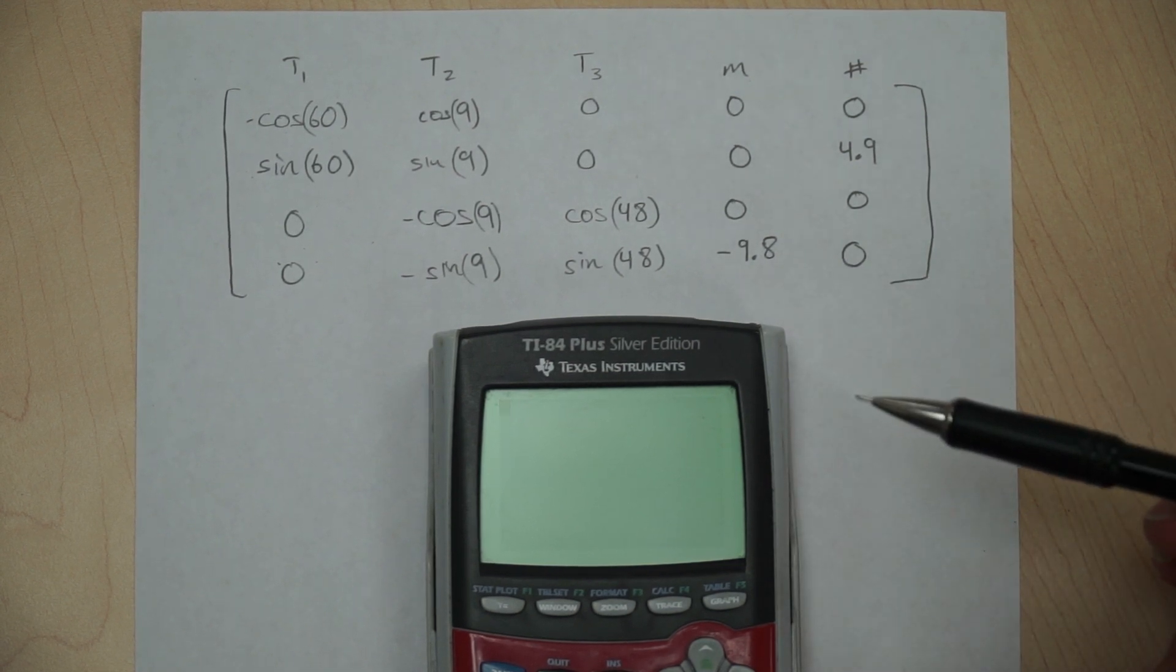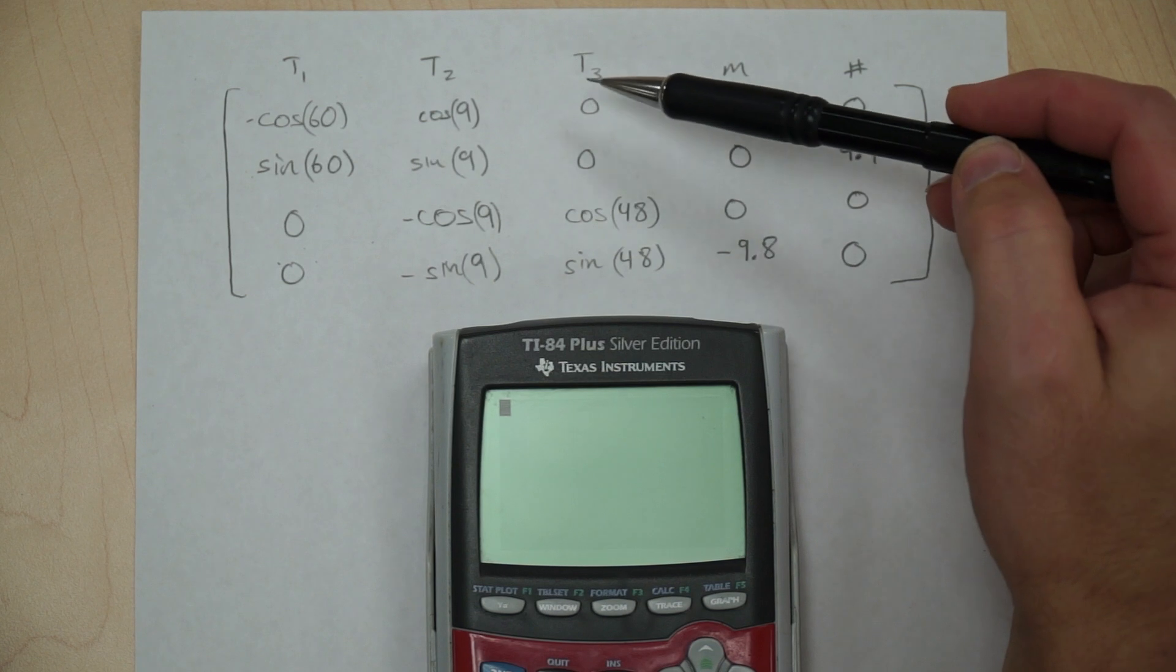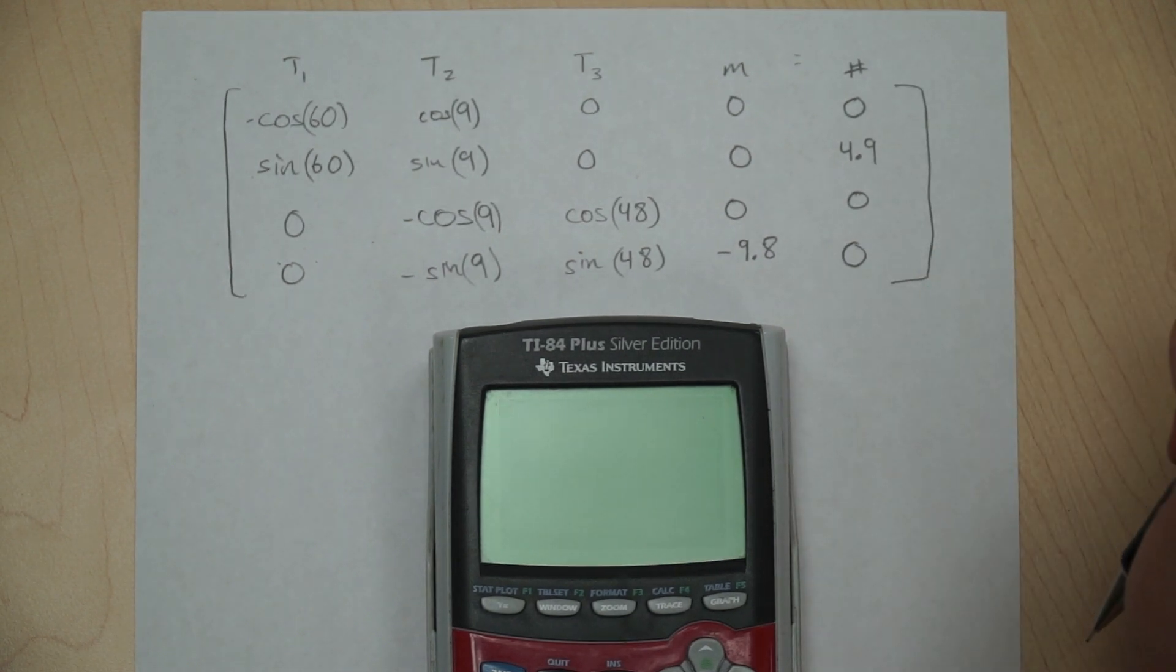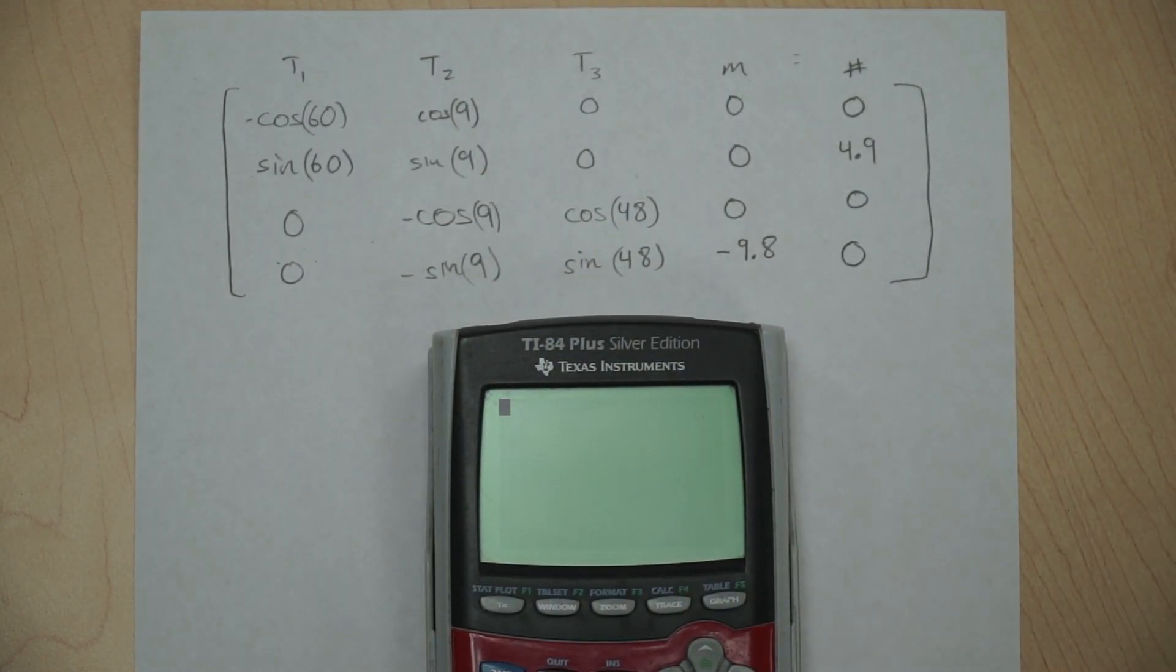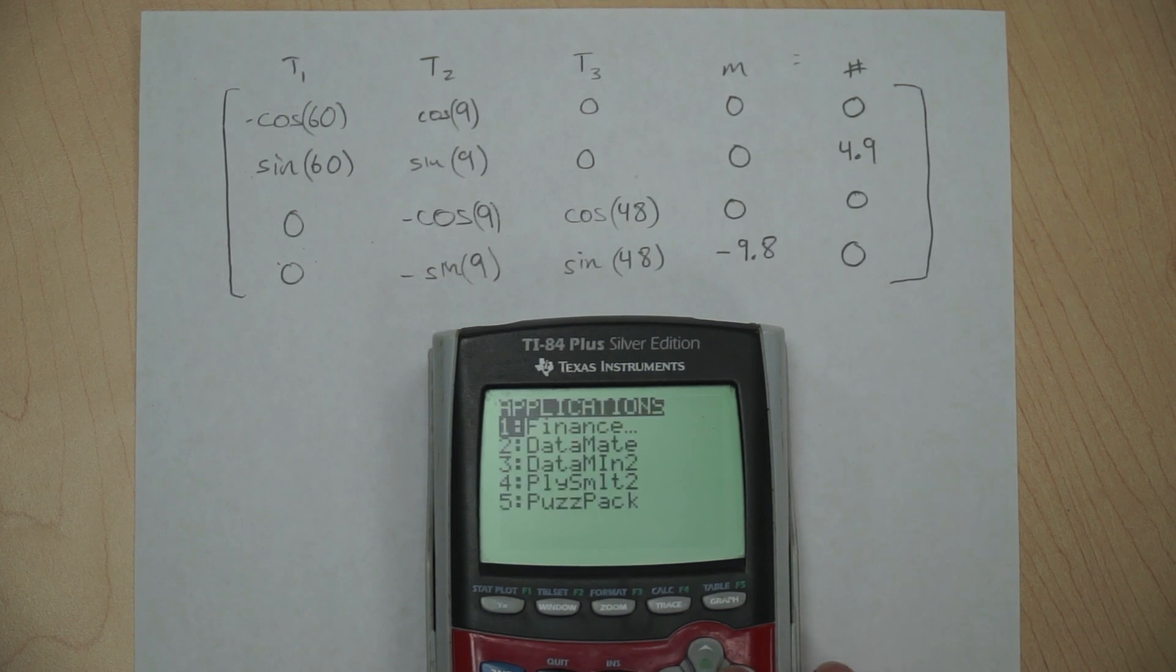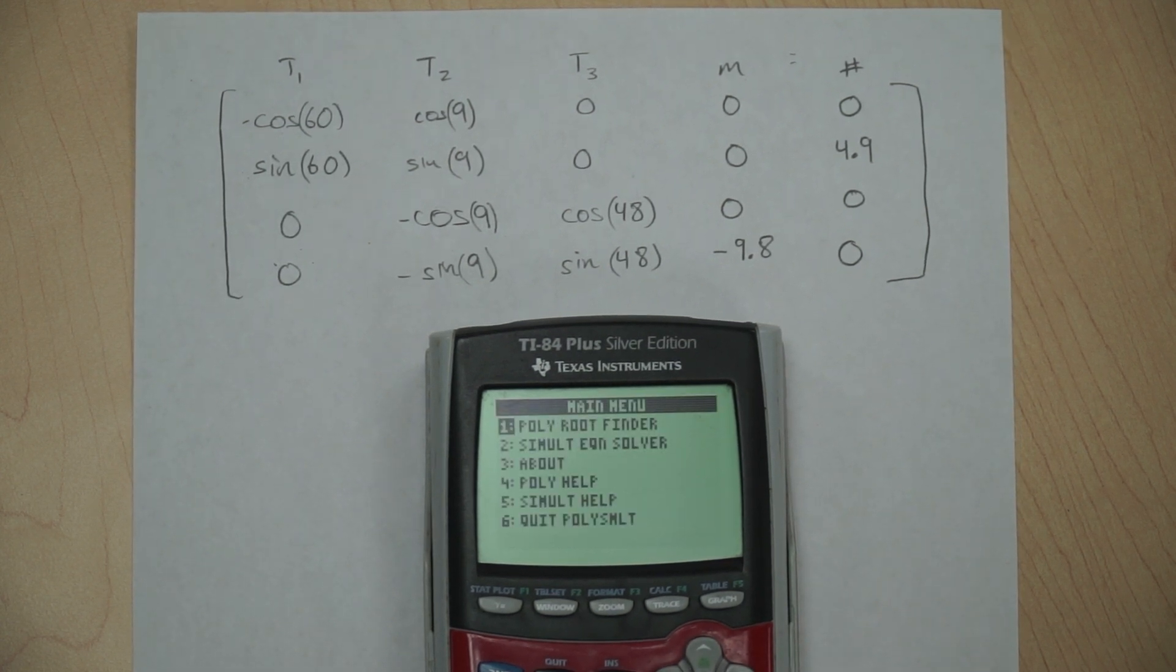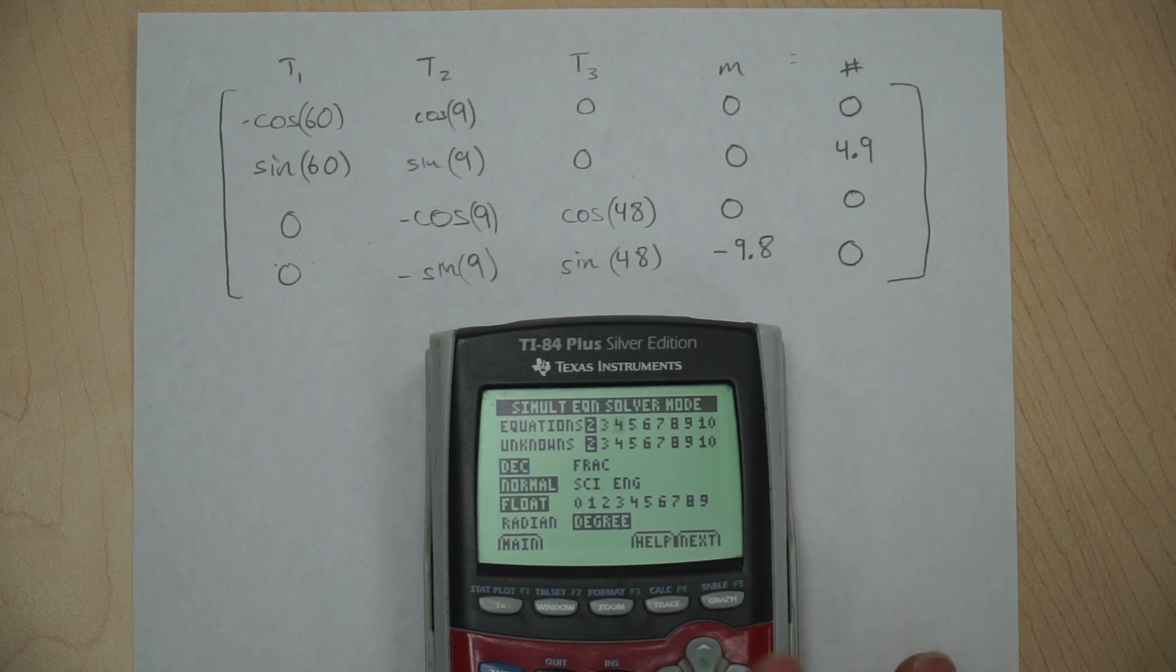All right, so now it's time to type this equation into our calculator. So we've written it down. We have everything in the right place. So we have a column for T1, a column for T2, a column for T3, a column for M. So those are all our unknowns. And we have that all equal to a column for numbers. And so we have our four equations, which would be our four rows, and our four unknowns, and our numbers column. So we're going to go ahead and go to apps, and we're going to scroll down to polysymalt2. We're going to go ahead and just kind of load into here. We're going to go down to simultaneous equation solver. You'll notice that we have four equations and four unknowns. So we just got to get that set up here. I definitely want a decimal answer. I want to be in degree mode as well, because I'm going to be using like 9 degrees, 60 degrees. I'm going to hit next.